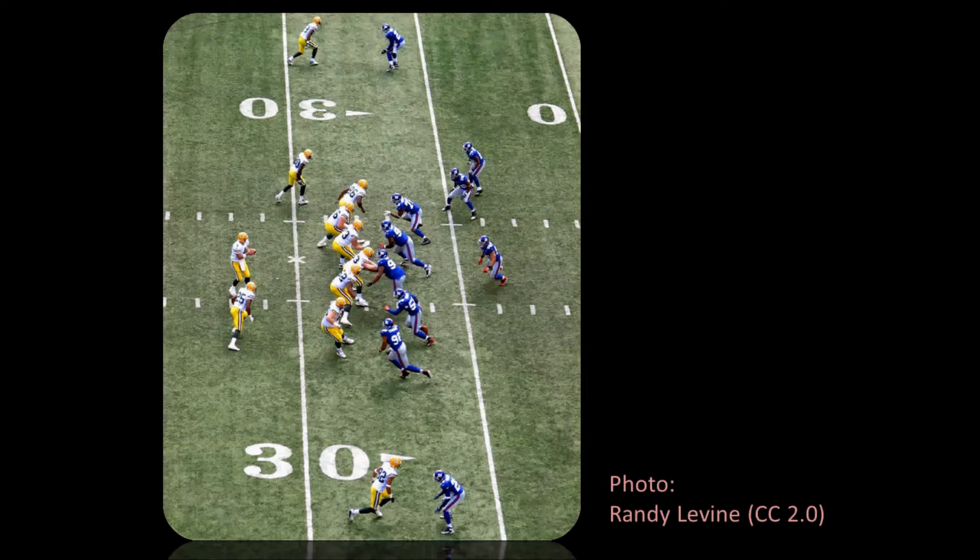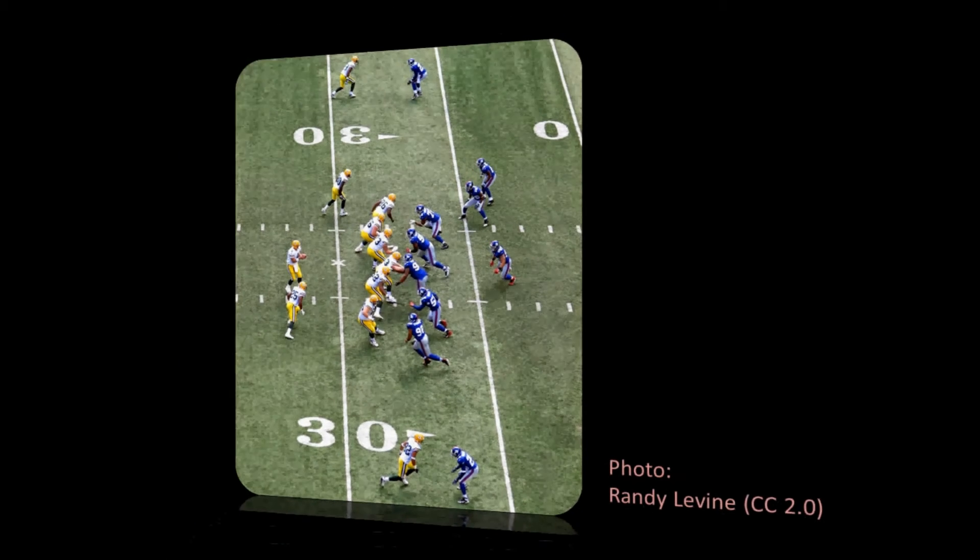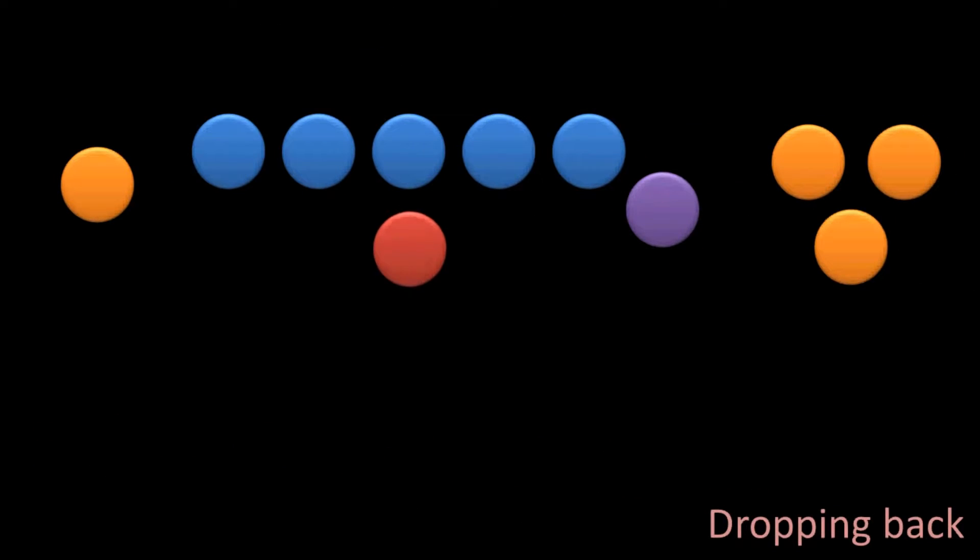If the quarterback is under center, he will get the ball from the center and he'll take a few steps backward really quickly, which we would call dropping back. And so, he could take a three-step or a five-step drop depending on how quickly he wants to throw the ball. What moving into the shotgun essentially does is removes this need to drop back because the quarterback is, in essence, dropped back before the ball is even snapped.